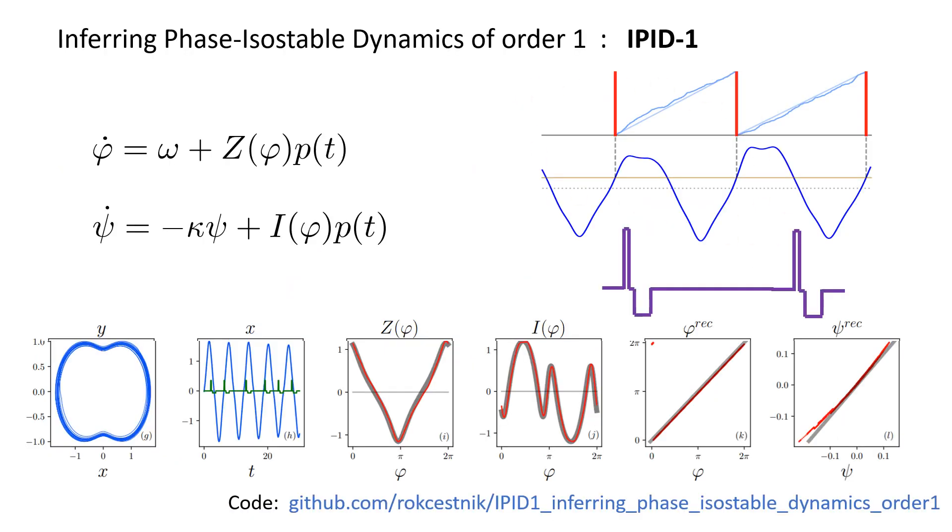But our main result is a novel technique dubbed Inferring Phase Isostable Dynamics of Order 1, or IPID-1 for short, based on the direct reconstruction of the Winfree Phase equation and the analogous first order equation for isostable dynamics. The technique works for general signals with or without well-pronounced marker events and for pulses of arbitrary shape.